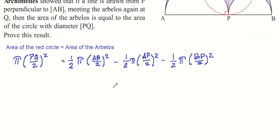We have to prove that this should be equal to π(PQ/2)². So I can simplify this as π/4 times PQ squared. That's the area of our red circle.